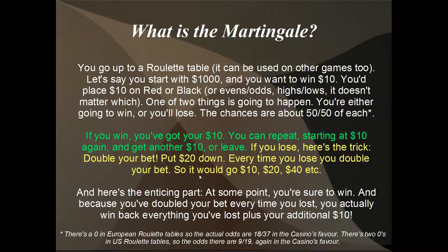Every time you lose, you double your bet. So if we lose once we go from ten dollars to twenty; lose twice, twenty to forty, and so on. But here's the enticing part: at some point you're sure to win. And because you've doubled your bet every single time you lost, you actually win back everything you lost plus an additional ten dollars. That means whether you win immediately or have a small losing streak, you'll end up with one thousand and ten dollars. You can keep repeating and get a thousand and twenty, thirty, forty, fifty — or stop whenever you want.